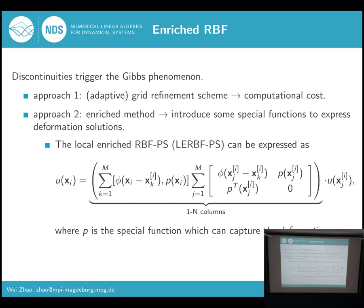The second approach is an enriched method. This method introduces some special functions to represent the discontinuous solutions. For this part, we put the RBF and special function together and construct a new cardinal function, and then we still consider the localized approach. Finally, we obtain the local enriched RBFPS method. We call it LERBFPS, where P is the special function. We can see that if P vanishes, this expression reduces to the LRBFPS method.